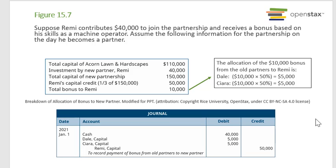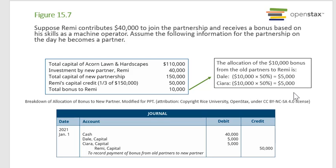Starting with $110,000 in existing partnership assets, the new investment by Remy is $40,000, making total capital $150,000. Remy's capital credit at one-third is $50,000, so the total bonus to Remy is $10,000. That $10,000 is allocated from the old partners: Dale pays $5,000 and Sierra pays $5,000. The journal entry is: Cash $40,000 debit, Dale Capital $5,000 credit, Sierra Capital $5,000 credit, Remy Capital $50,000 credit.